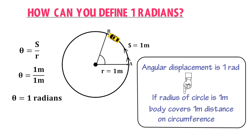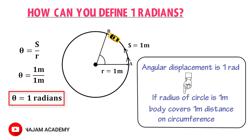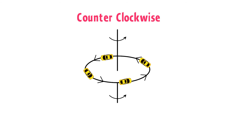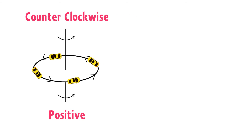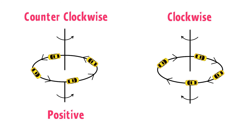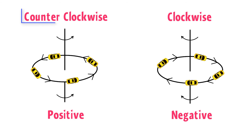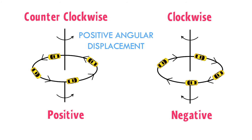If you understand the concept of theta equals 1 radian, then you understand angular displacement. You must also learn the concept of negative and positive angular displacement. If a body is rotating in the counter-clockwise direction, then according to physics conventions its angular displacement is positive. Counter-clockwise angular displacement is known as positive angular displacement.